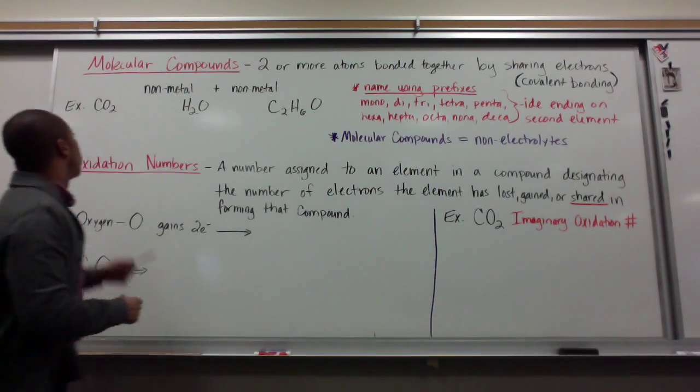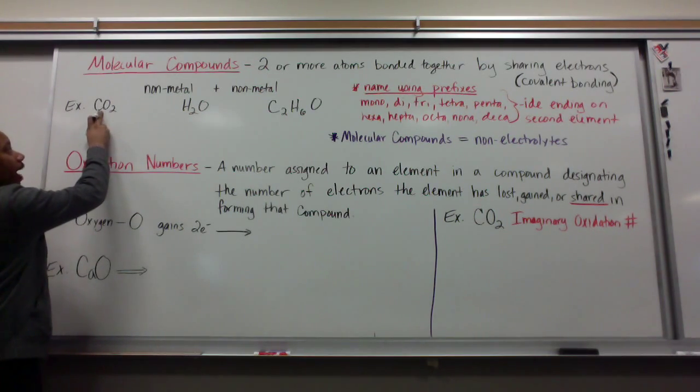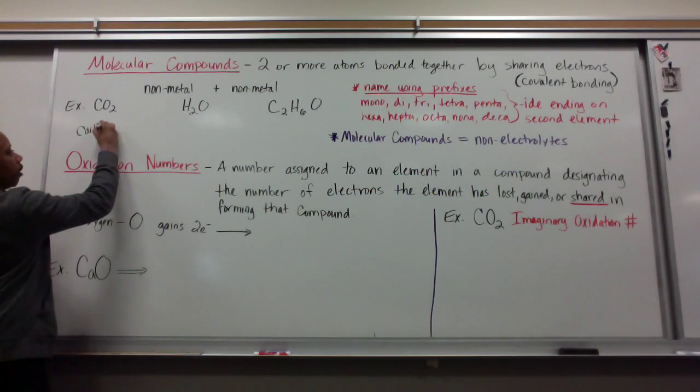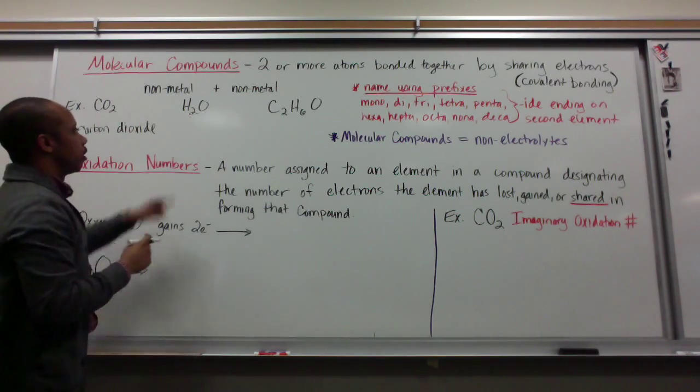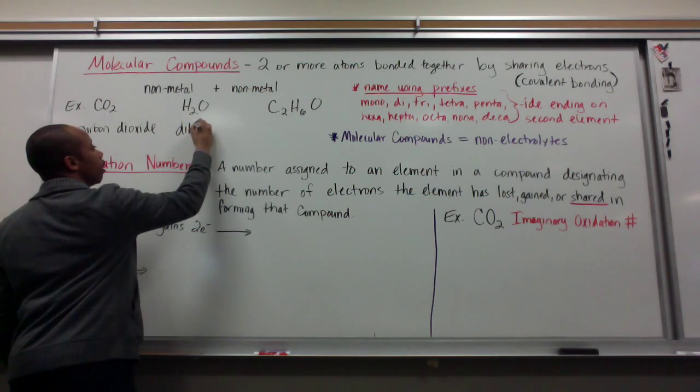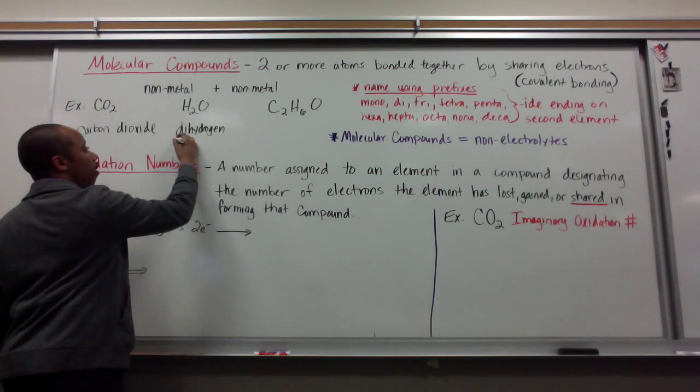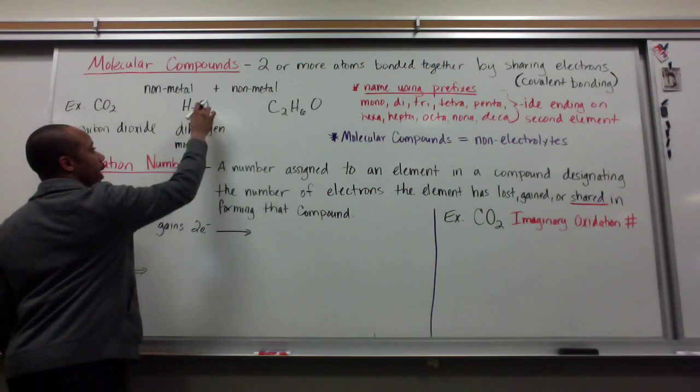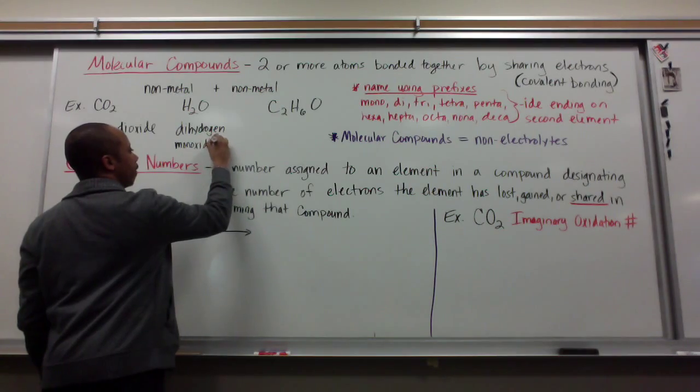Let's go through that now. For CO2, if my first element only has one atom, I don't write mono. I simply write the elemental name, carbon. I have two oxygens, so I put di for two, and I change the ending to IDE, carbon dioxide. H2O. I have two hydrogens, so I write di for two, dihydrogen. I have one O, so I write mono. And I change the ending of oxygen to IDE, so monoxide.